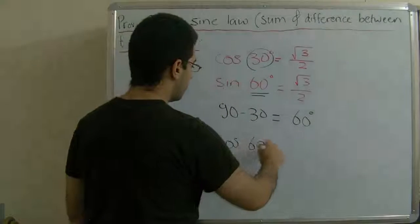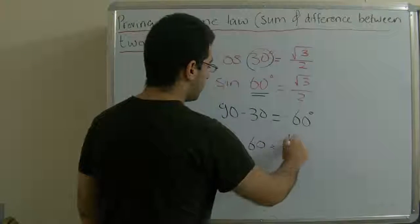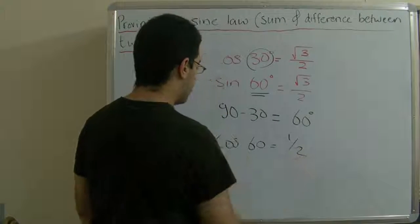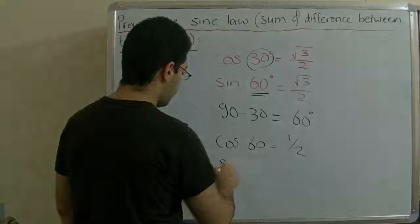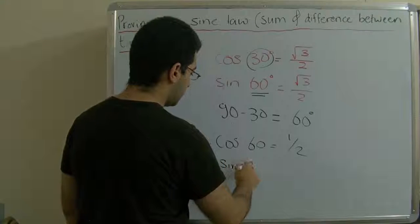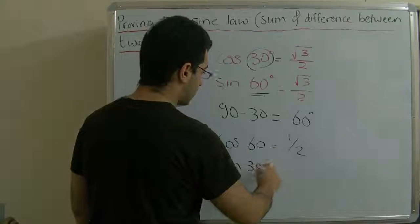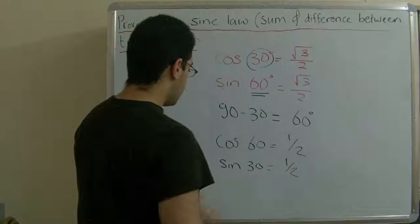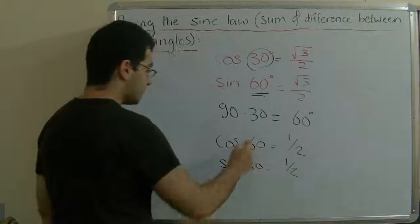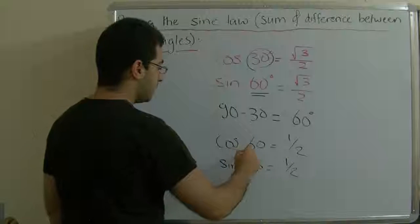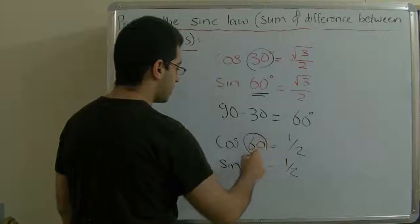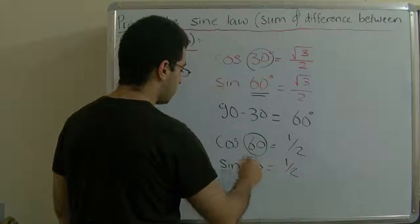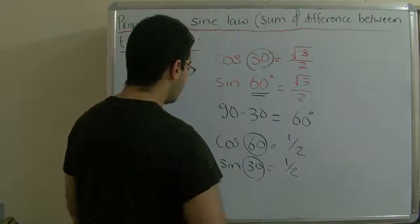Cosine 60 actually equals one half, and sine 30 also equals one half. So 90 minus theta, which is 60, will equal 30 degrees.